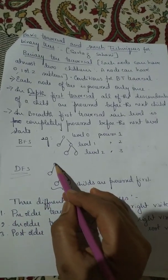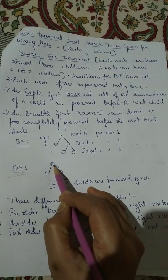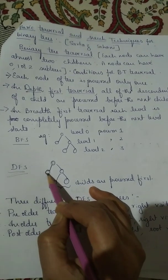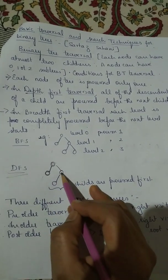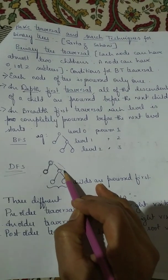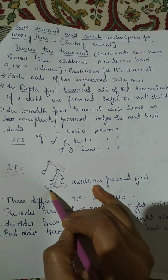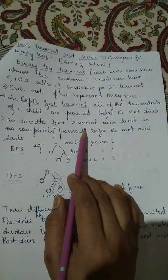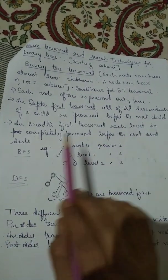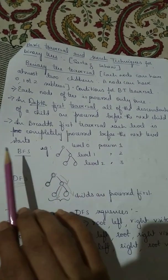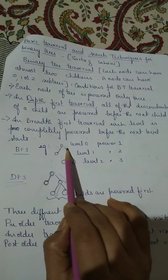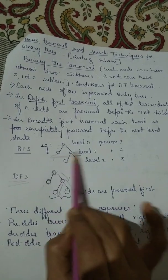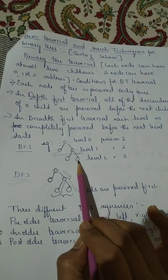For example, in DFS, first traverse the root, take the left node and traverse there. Once there is no child node, go back and continue. Then go for right, left node, and then root. For BFS — breadth first traversal — each level is completely processed before the next level starts. Process level 0, then level 1 with those two nodes, then go for level 2 and process those two nodes.